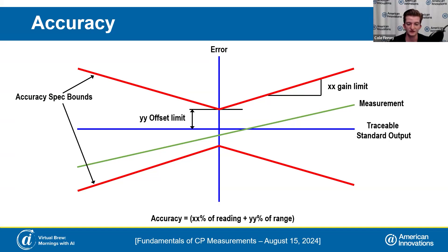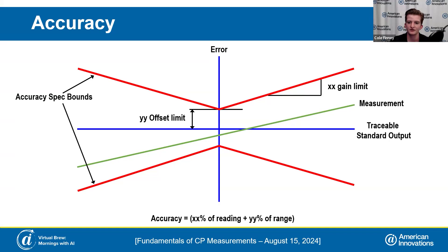This is important because we recommend calibrating your device every year. Any time you're in the field taking measurements and an audit comes up, validation paperwork for the device you used to capture DVM readings will likely be requested — I've seen it happen with digital voltmeters and heard about it with RMUs. So it's very important to make sure you're taking an accurate measurement.